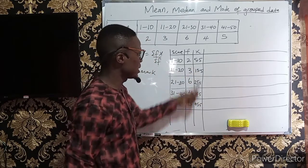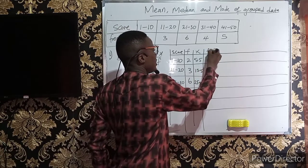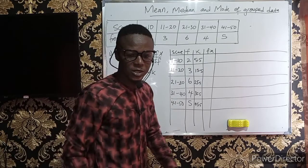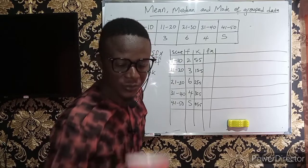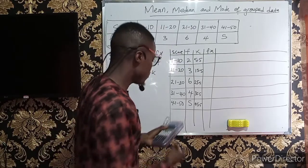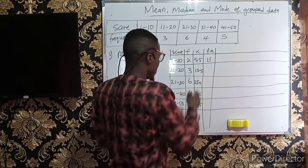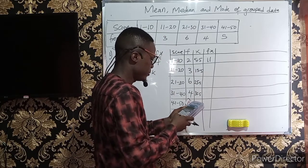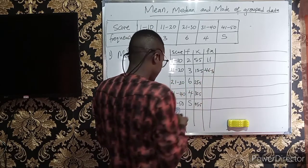Having done this, the next thing we need is fx, because from the mean formula we multiply f by x. So: 2 times 5.5 gives 11; 3 times 15.5 gives 46.5; 6 times 25.5 gives 153.